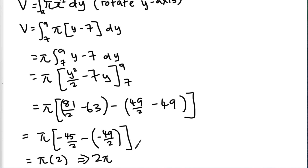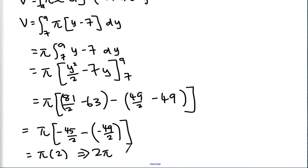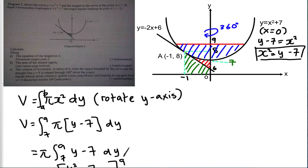This question isn't really hard. You need to understand how to find the volume, the area, and the equation. Always find the x-intercepts and y-intercepts first because you'll need them for parts B and C. Make sure you understand the question before starting. Thanks for watching.